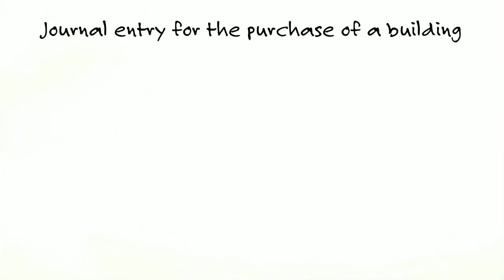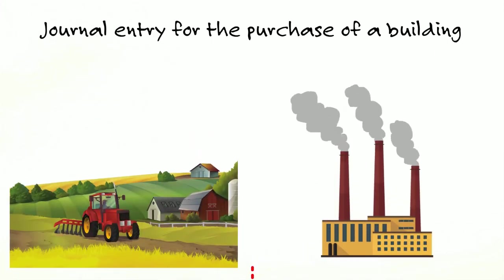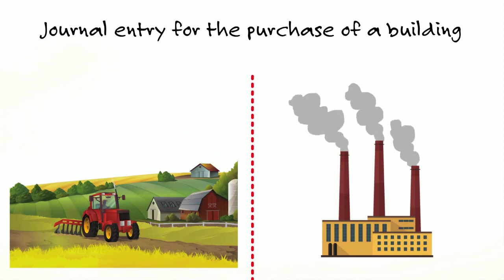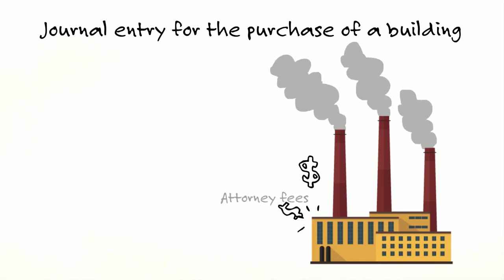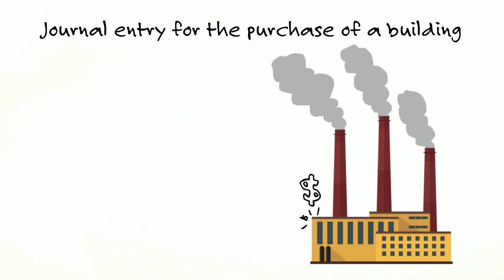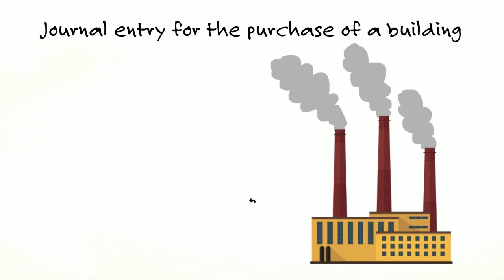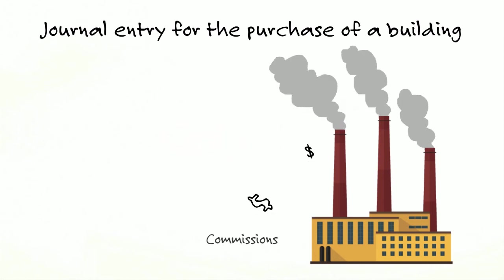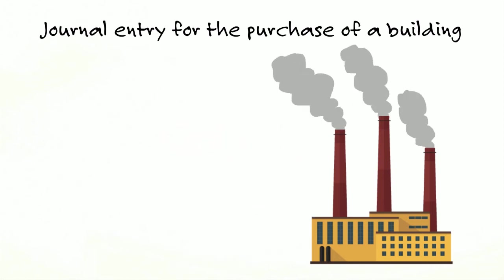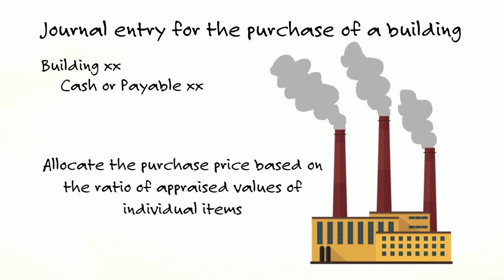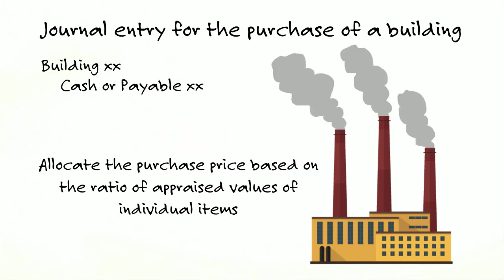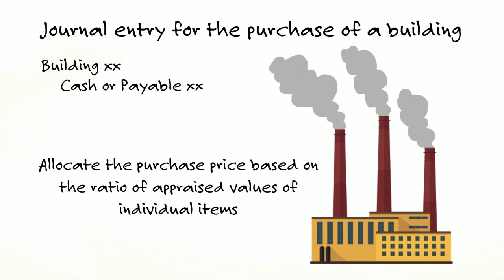In a basket purchase of land and building, you must segregate the costs because land is not subject to depreciation but the building is. When buying a building, it's not just the purchase price — attorney's fees, repair charges neglected by the previous owner, reconditioning costs, and commissions all get included. Journal entry: debit building, credit cash. For a basket purchase, use the ratio of appraised values to determine how much to debit to each account.